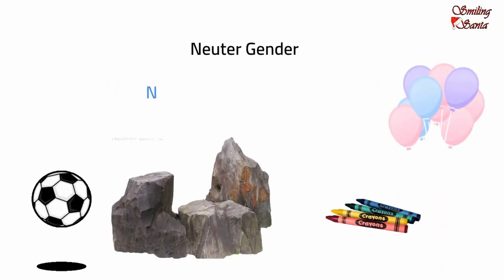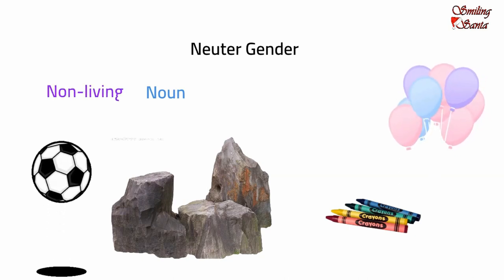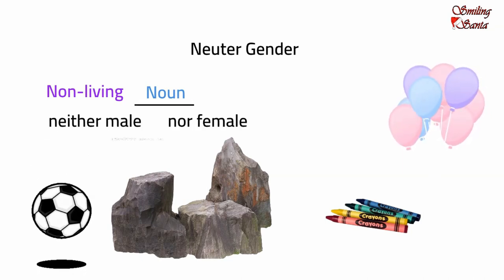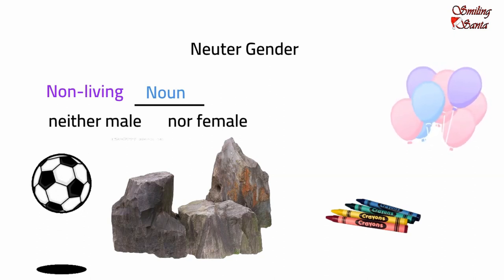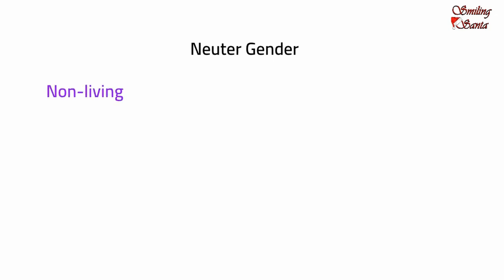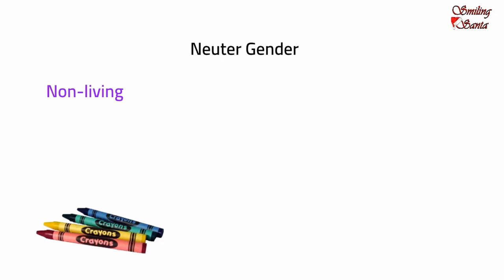There are some nouns that are without life or non-living, so they are neither male nor female. Nouns that are non-living and neither male nor female are said to be of the neuter gender. A neuter gender noun refers to a non-living thing. Such nouns are used for things without life. For example, in the sentence 'I have many crayons,' the naming word is crayon. It does not specify any gender as it refers to a non-living thing, so the word crayon is of the neuter gender.